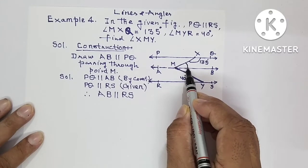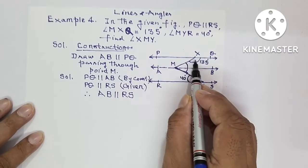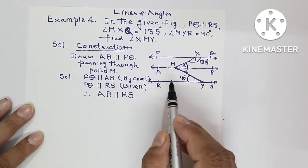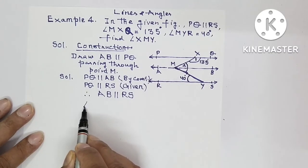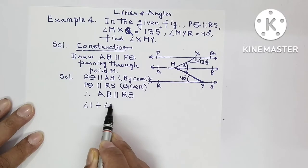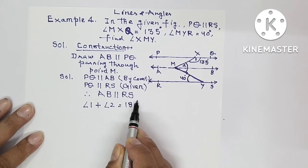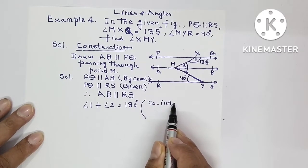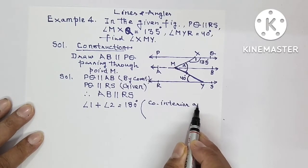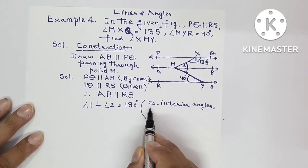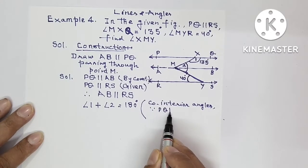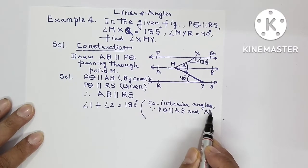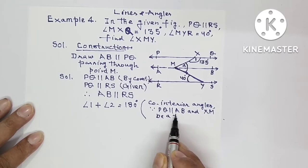Now to find this angle, label angle 1 where 135 is, and label angle 2 here. Angle 1 and angle 2 are co-interior angles. So we will write angle 1 plus angle 2 is equal to 180 degrees, and in the bracket we will write co-interior angles, because PQ is parallel to AB and XM be a transversal.